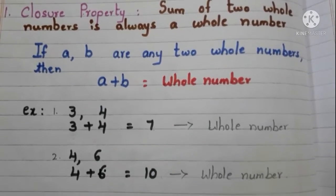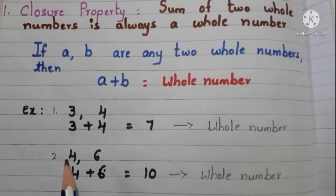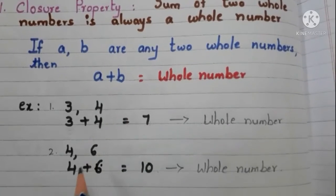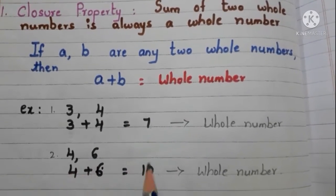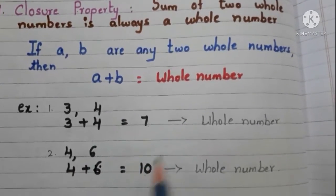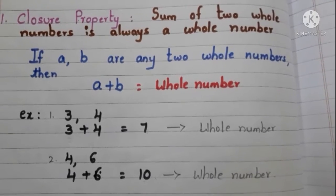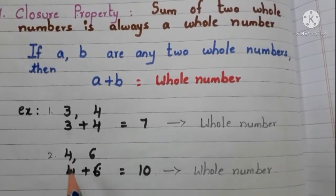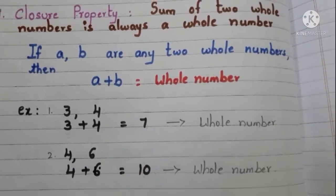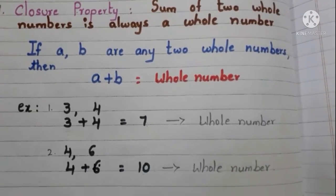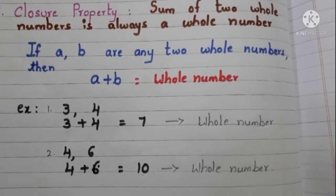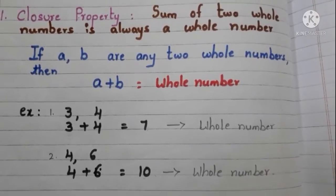Let us take another set of whole numbers. Take 4 and 6. Add them. 4 plus 6 is 10. 10 is a whole number. So sum of any two whole numbers is a whole number. We can conclude that the whole numbers are closed under addition.